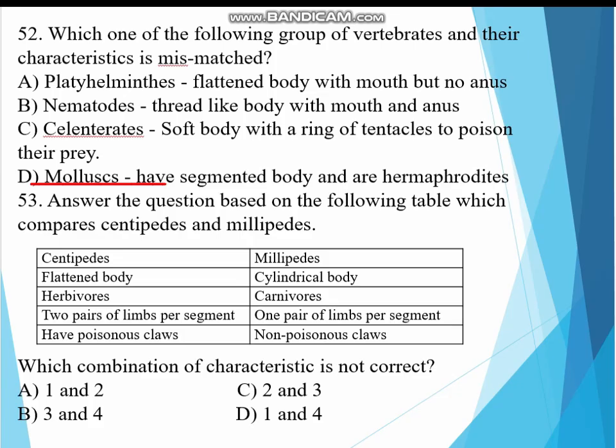Question 53. Answer the question based on the following table which compares centipedes and millipedes. Centipedes: flattened body, herbivores, two pairs of limbs per segment, have poisonous claws. Millipedes: cylindrical body, carnivores, one pair of limbs per segment, non-poisonous claws. Which combination is not correct? Pairs two and three. Two and three are not correctly paired, they are switched.